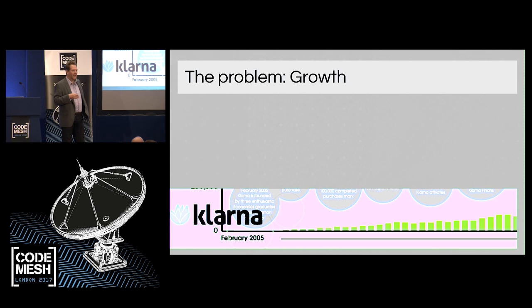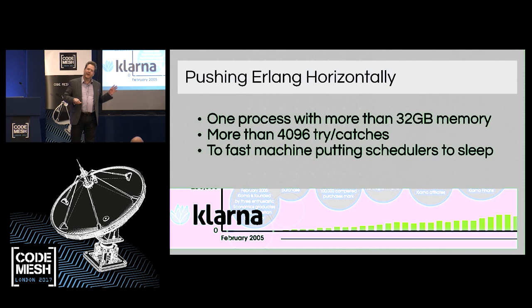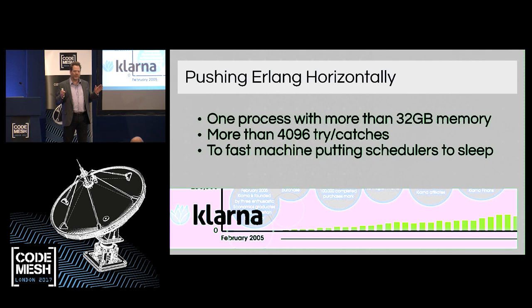But we had one problem: growth. Traffic was doubling every 10 to 11 months — exponential growth. We got more customers, more people starting to buy things online, more sales people, more customers. When I say it's a problem with growth, of course that's for the tech department — the rest of the company didn't see it as a problem; they thought it was great. Since the company was getting more money, we could just scale horizontally — we just bought larger and larger computers, finally running on a two-terabyte machine with 40 cores, 80 with hyperthreading. That solved the problems for another couple of years.